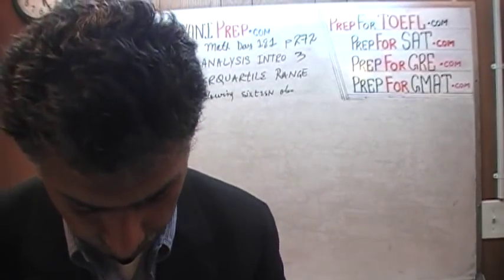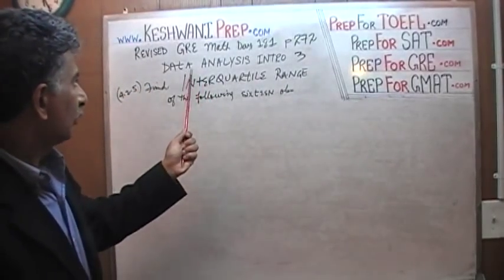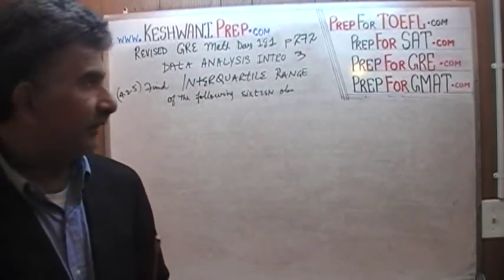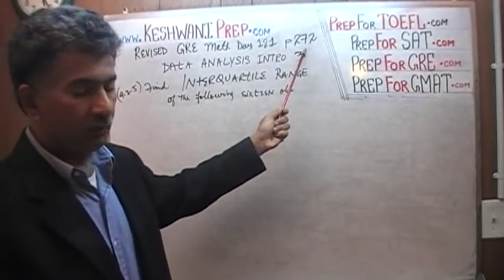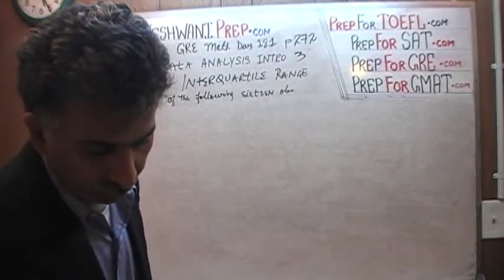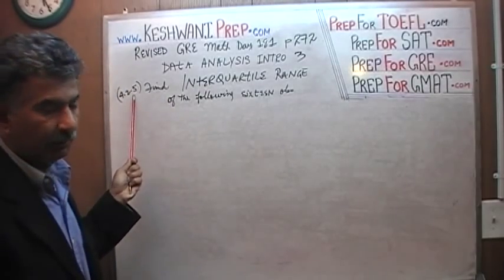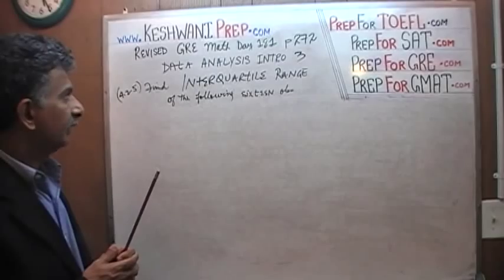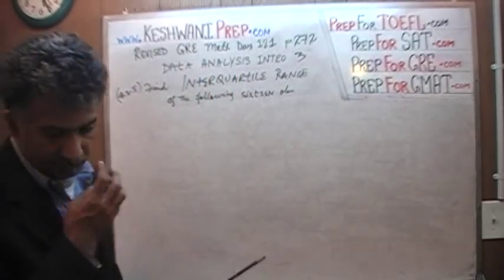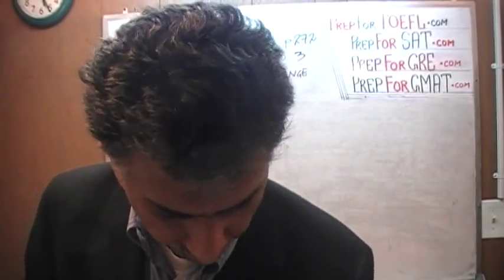The topic we are going to cover today is what is known as interquartile range. It is something that you will find on page number 272. Please turn to page 272 and look at example number 4.2.5, which is exactly what we are going to do right now. We are in the process of doing the data analysis topic, which we started a few days ago.